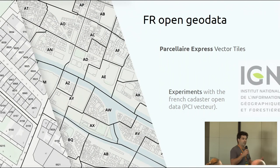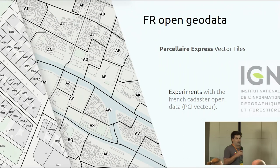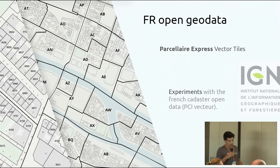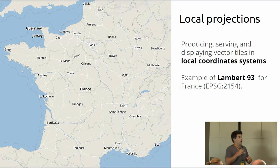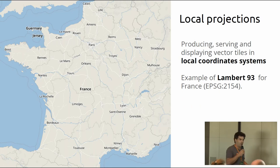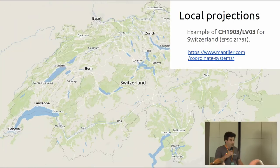We are experimenting with the same idea using French open data progressively released by the National Geographic Institute, IGN. A simple example uses the French cadastre data that we transform into vector tiles and make available on Cloud. In the same principle, we are also investigating local projections — we are now able to render vector tiles not only in WebMercator but also in WGS84 or, in the case of France, Lambert 93, and the Swiss local projection too.